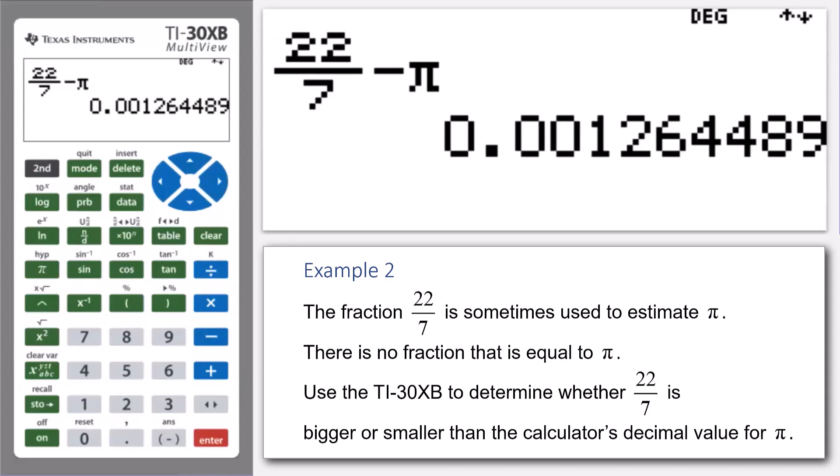Now, that decimal is greater than zero, and so therefore we can conclude that 22 over 7 is indeed greater than pi, bigger than pi.